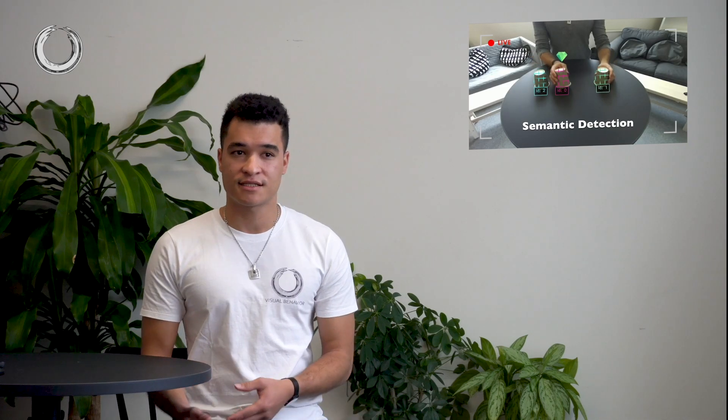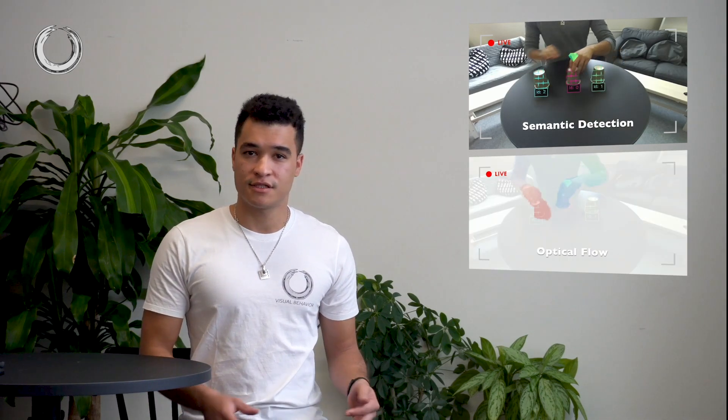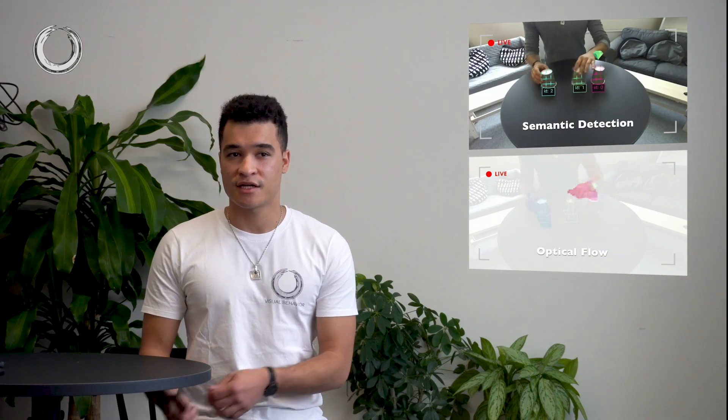The modules that we use to solve this problem are based on semantic detection for bounding box and mask detection for each object, but also optical flow to detect the motion in the scene, and also 3D perception to detect exactly the position of each object in 3D coordinates.